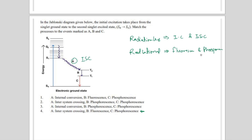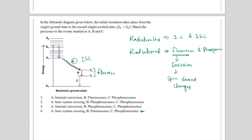In books, fluorescence is simply mentioned as S1 to S0 or similar, but you have to understand the concept. Fluorescence is an emission phenomenon where the spin does not change — the particle comes from a higher energy state to a lower energy state without a spin change. So from the second triplet state to the first triplet state, spin is not changing — that is why this transition is fluorescence.